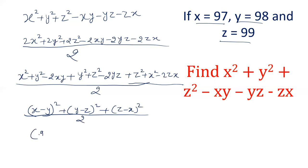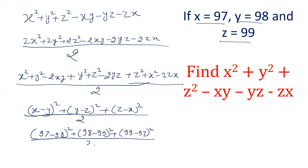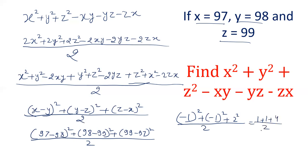Let's put the values: x is 97, y is 98, and z is 99. So we get (97 - 98)² + (98 - 99)² + (99 - 97)², divided by 2. 97 - 98 is -1, giving (-1)² = 1. Similarly we get -1 in the second term, so (-1)² = 1. And (2)² = 4. That gives us 1 + 1 + 4 = 6, divided by 2. So the value of this expression is 3.